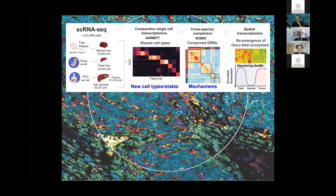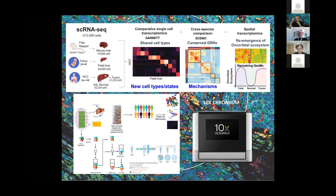We validated observations using the NanoString GeoMx DSP platform. One thing I would say is that hepatocytes are a really tough cell type to work with. We included a sorting strategy — sorting CD45 positive and negative — just to enrich for hepatocytes because they simply don't like dissociation, and then we combine them one-to-one. All this is listed on protocols.io, so feel free to download the protocols.